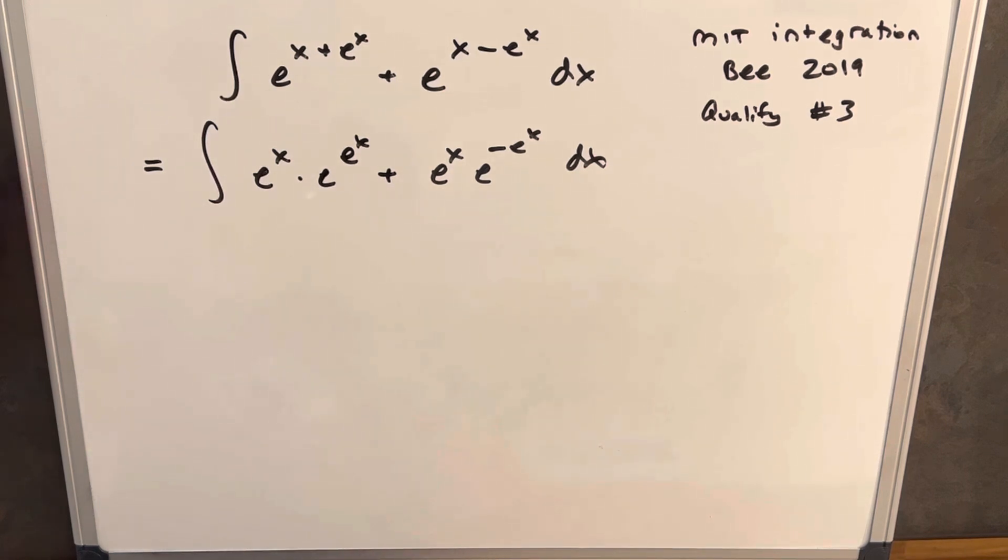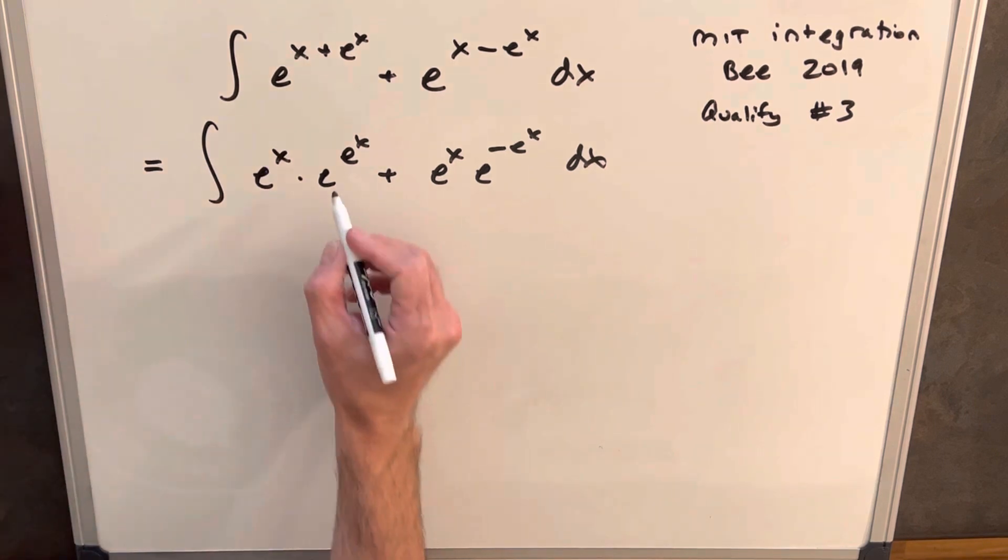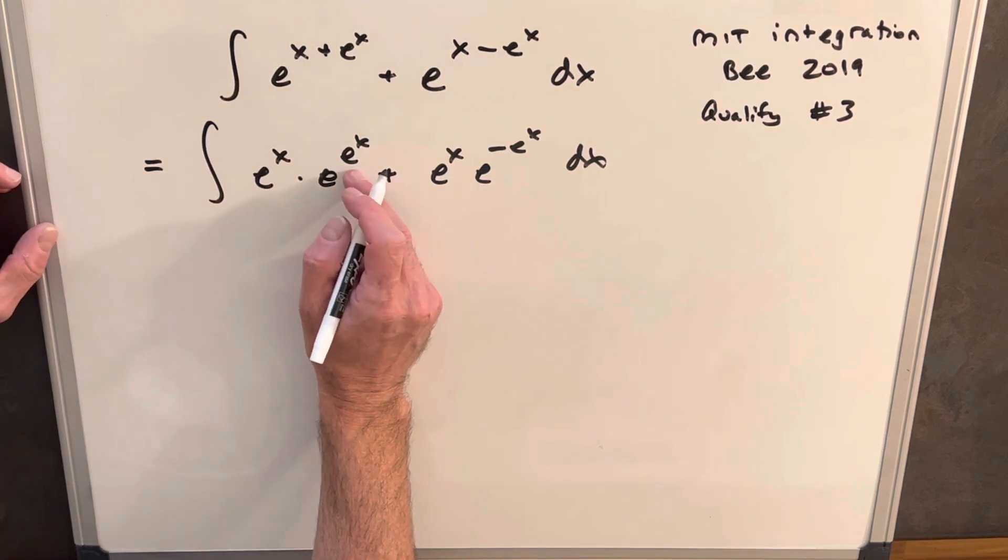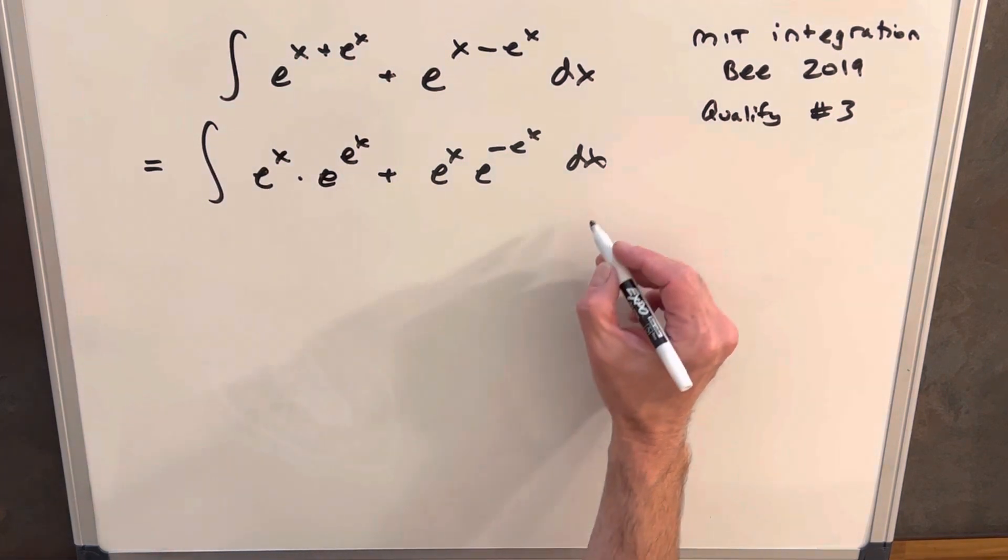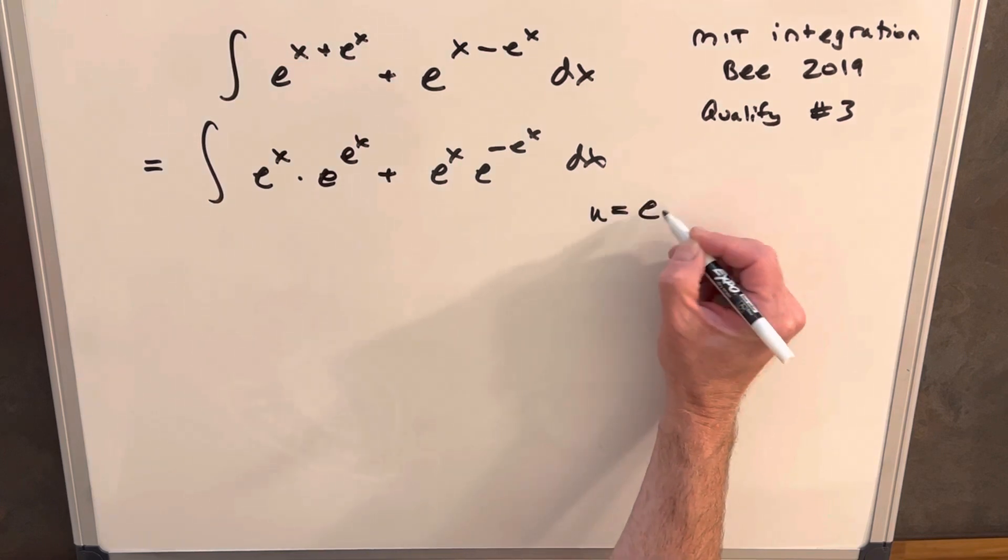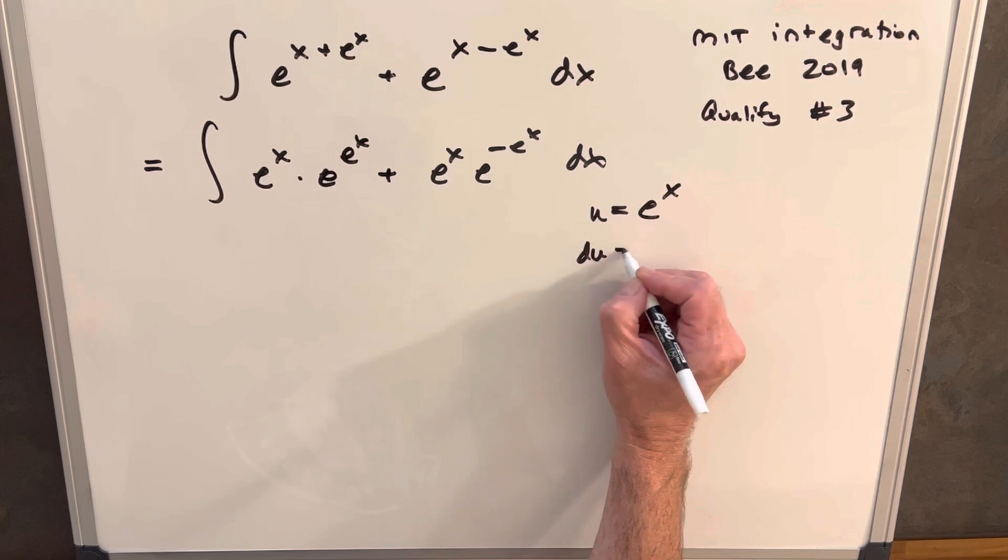Now thinking about that u substitution, of course you could try something complicated like you could try to call u e to the e to the x and I think that's just gonna make a mess. So what I want to do is let's try to keep it simple and say hopefully this will work: u equals e to the x. Because then the beauty of that is when we take our du, it's just gonna be e to the x dx.